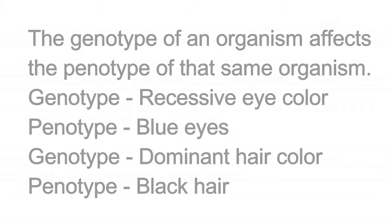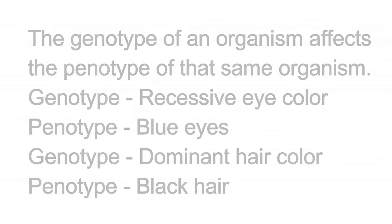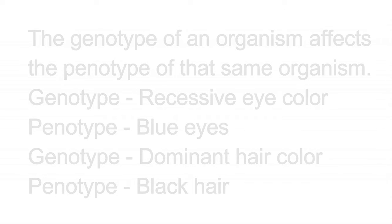The genotype of an organism affects the phenotype of that same organism. For example, genotype for eye color gives the phenotype of blue eyes. Genotype for dominant hair color gives the phenotype of black hair.